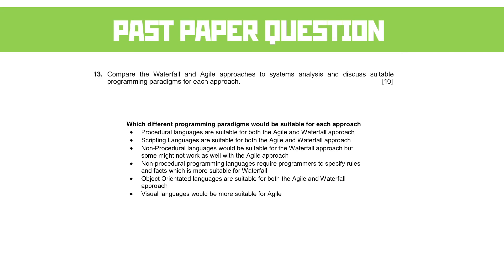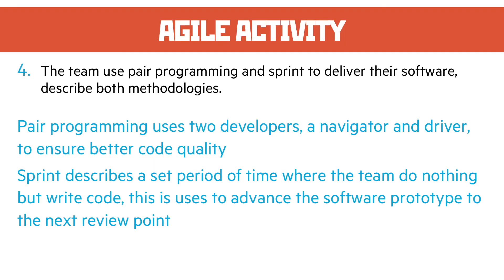Sprint is the process where we set aside a period of time to do nothing but code. In some of the best agile implementations, project leaders actually stop other teams from contacting them whilst they're doing a sprint, which could be for a period of days or weeks. This means they focus on nothing else — no documentation, no fussing about, just writing code — and you can make masses of advancements in the software prototype over a shorter period of time, getting to the next review point.